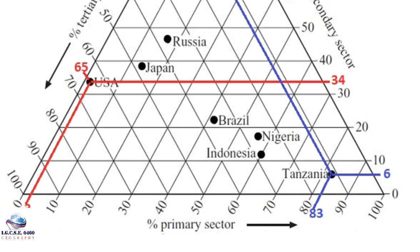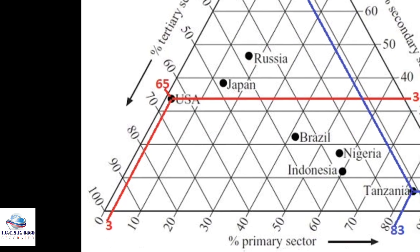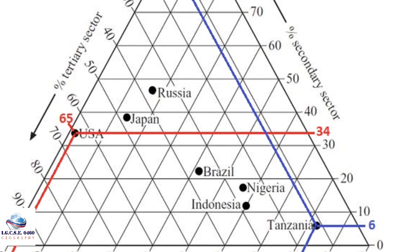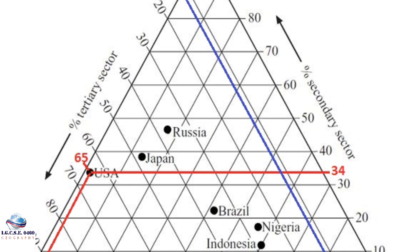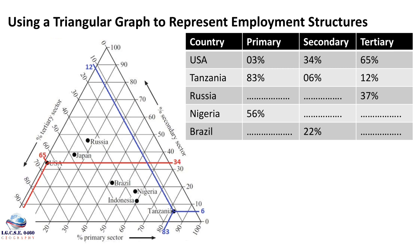For the USA, which is an MEDC, the dot corresponds to only 3% in the primary sector. Following the line to the secondary sector gives 34%, and the tertiary sector corresponds to around 65%. Being an MEDC, it has a large proportion of people in the tertiary sector. Some figures for Russia, Nigeria, and Brazil have also been filled in — go ahead and correspond those dots with the right figures for each sector.